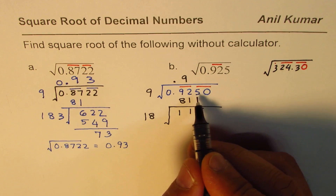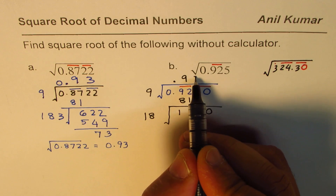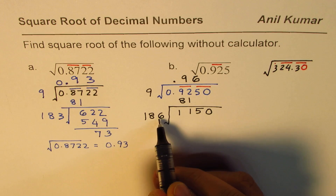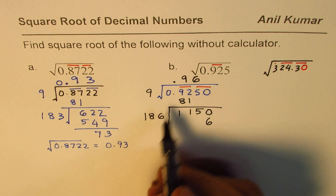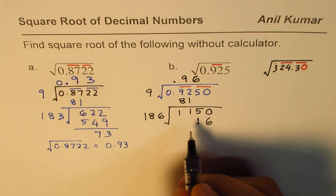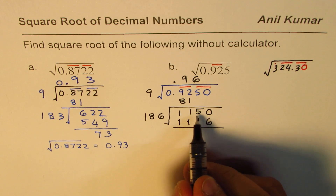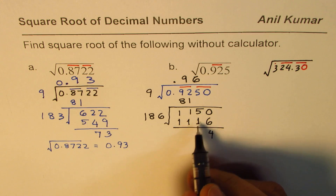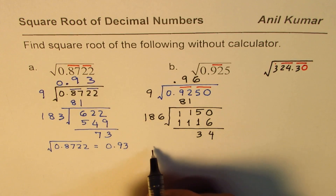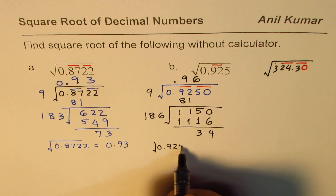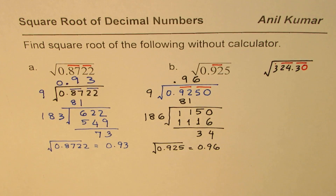I should bring two numbers — I had 50, so I write 50 here. We try 6: write 6 in the quotient. Six times 6 is 36, six times 8 is 48, 48 and 3 is 51, six times 1 is 6, 6 plus 5 is 11. The remainder is: 110 minus 6 is 4, and 4 minus 1 is 3. So 0.96 is the square root of 0.925 to two decimal places.